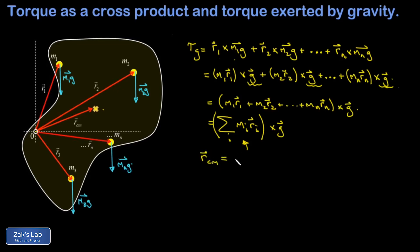The center of mass position vector is one over the total mass of the object times the sum of all mi's times their position vector ri. So that sum in parentheses is actually the total mass M multiplying the center of mass position vector.